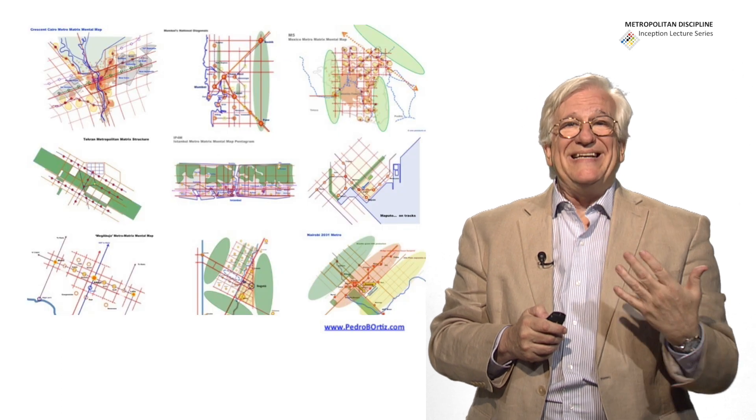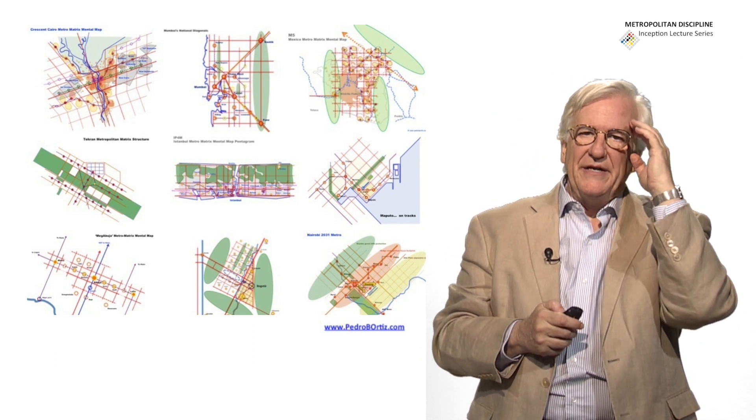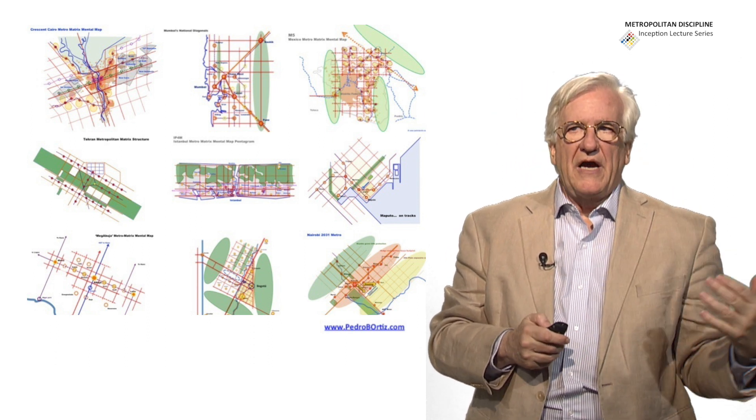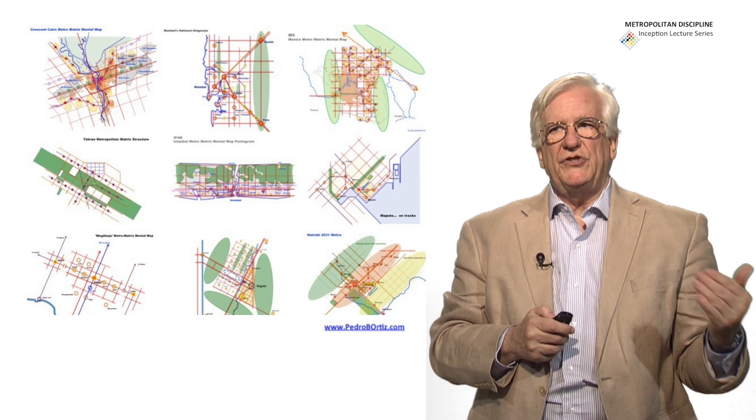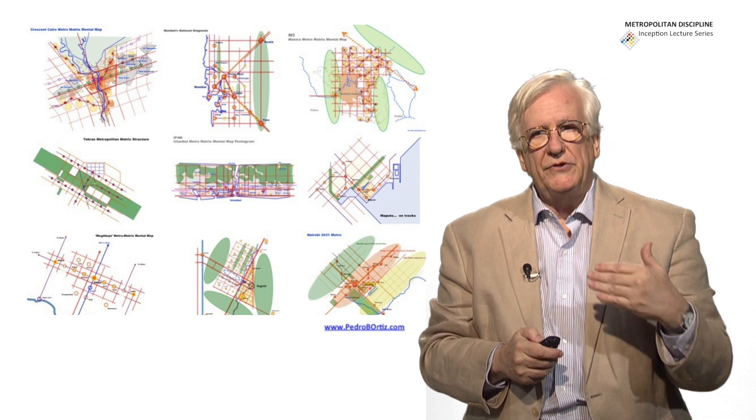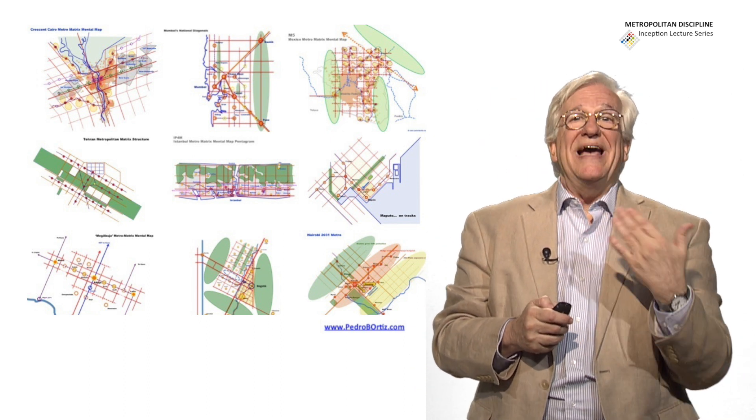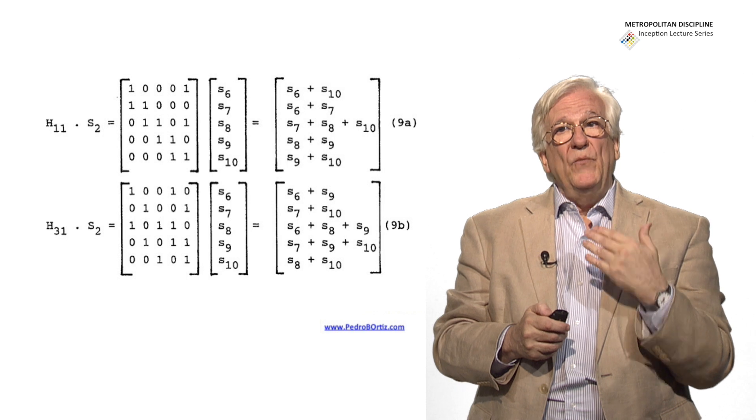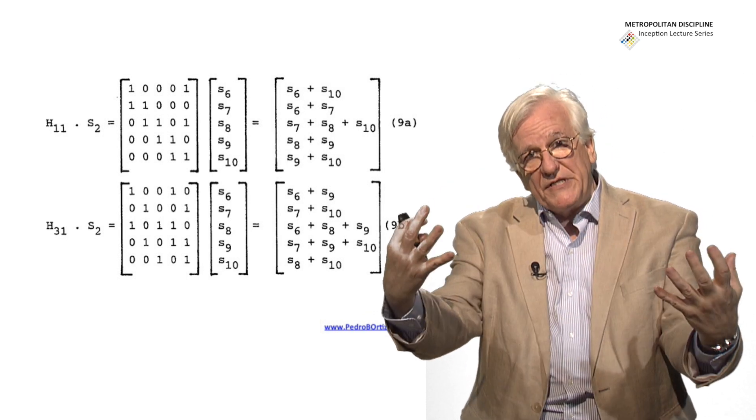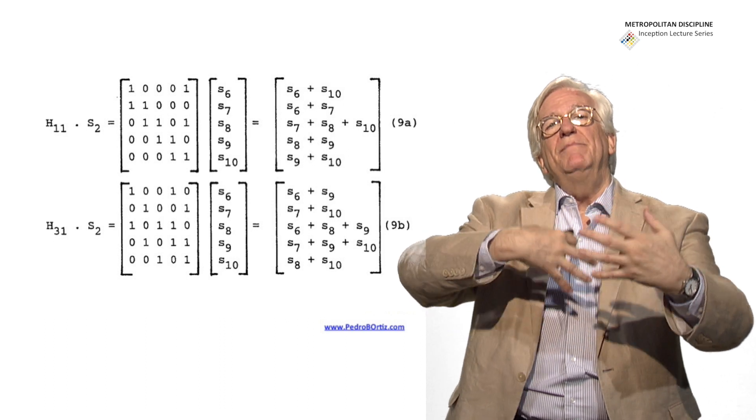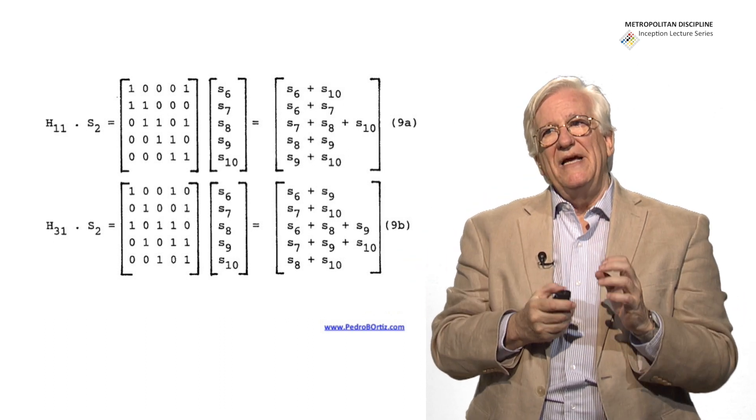We have many examples of those matrixes around the world. I am just presenting nine of them here. Cairo, Mumbai, Mexico, Tehran, Istanbul, Maputo, Abuja, Bogota and Nairobi. But we have many, many, many. And the way you deal with those reticular systems of the metropolis is using matricial matrix mathematics.